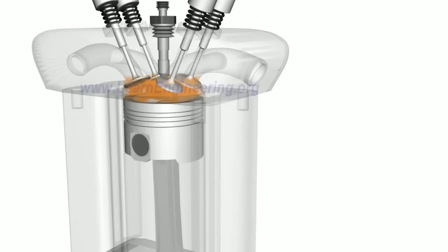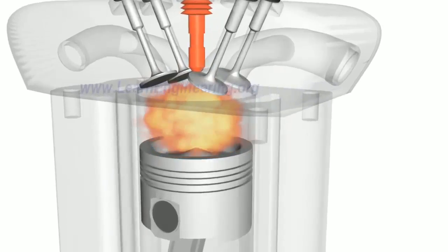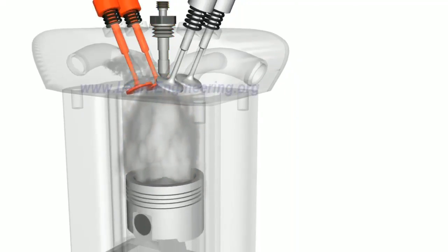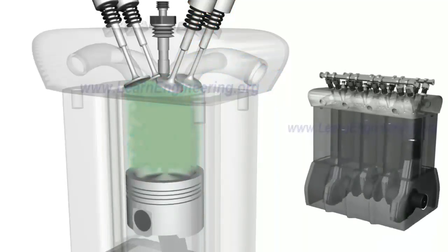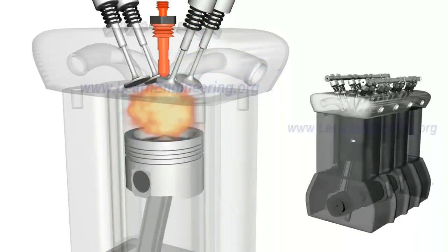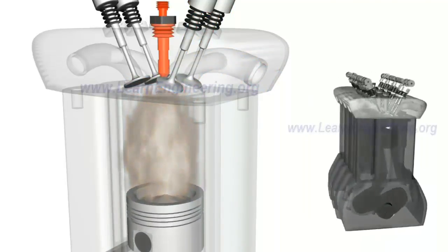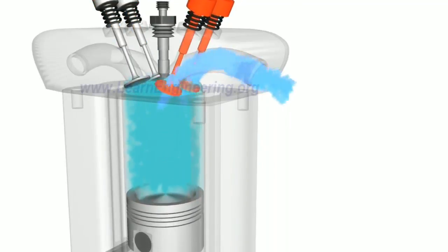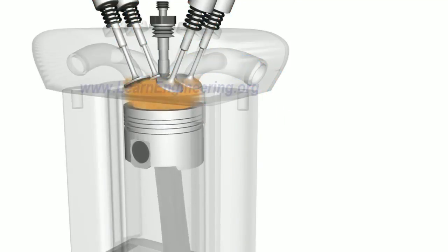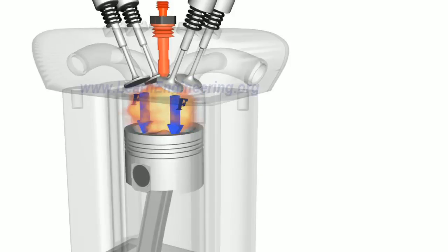The diesel engine produces rough and uneven output, resulting in vibrations. Looking at the design, when comparing diesel engines using 4 strokes, the power strokes and pistons produce the same energy per cycle.